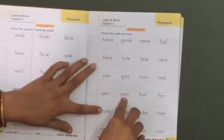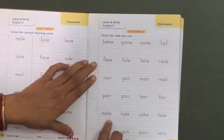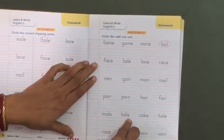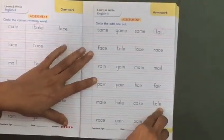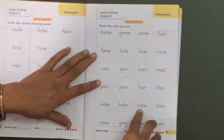Pale is the odd one out. M-A-L-E male, H-A-L-E hale, C-A-K-E cake, T-A-L-E tale. Cake is the odd one out.